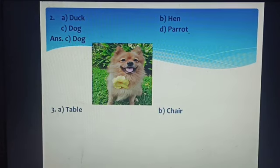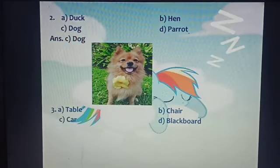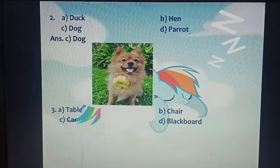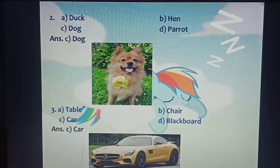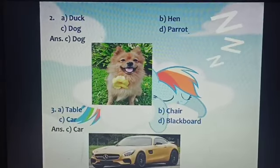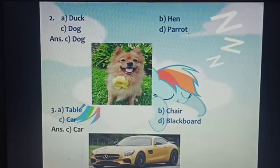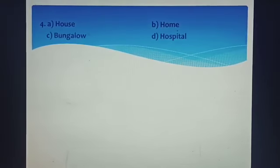Now Number 3: A) Table, B) Chair, C) Car, D) Black. The right answer is C) Car. Table, Chair, and Black are classroom items, but Car is different. So the right answer is C) Car.